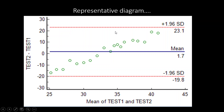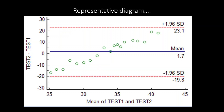This is the representative diagram for the Bland-Altman plot. For comparison of two methods, the mean difference of the two methods is plotted on the vertical axis, and the mean value of both methods is plotted on the horizontal axis. Above and below the mean, upper and lower limits are plotted within a 95% confidence interval, and we will interpret these while performing the test in SPSS.